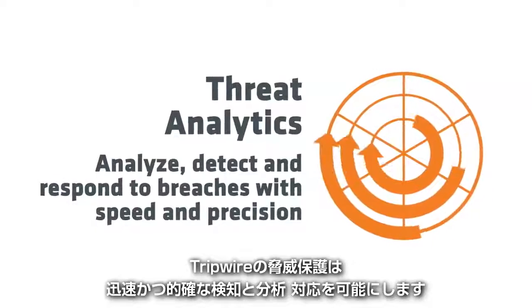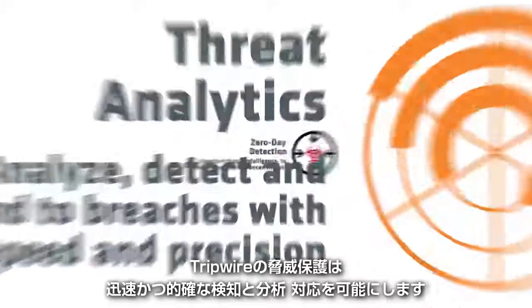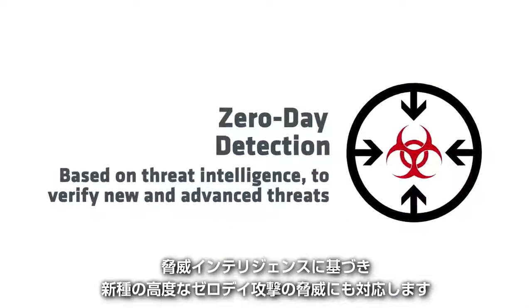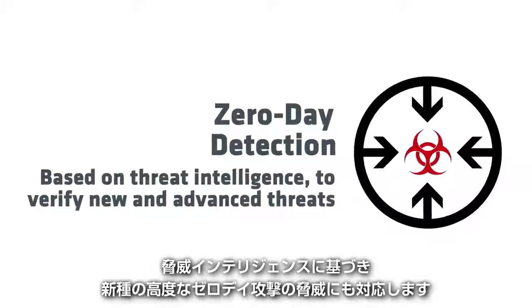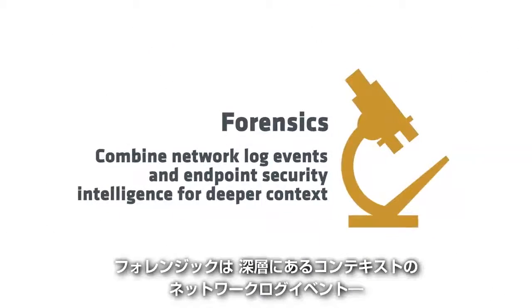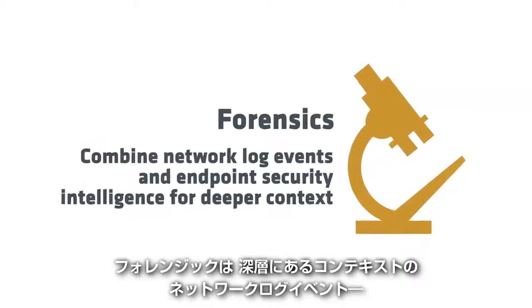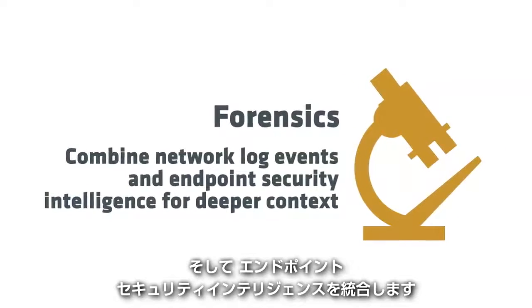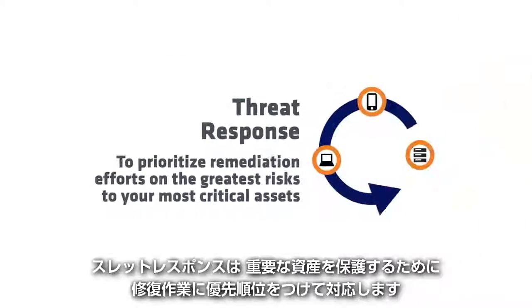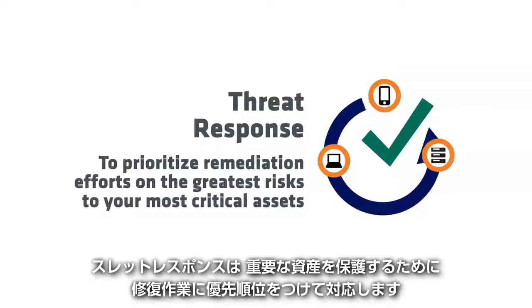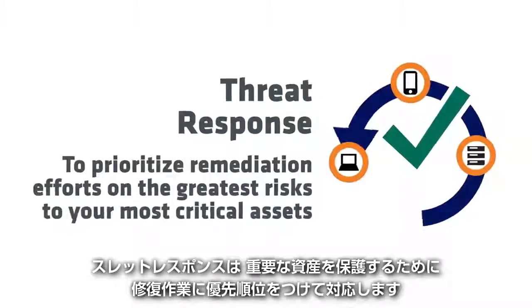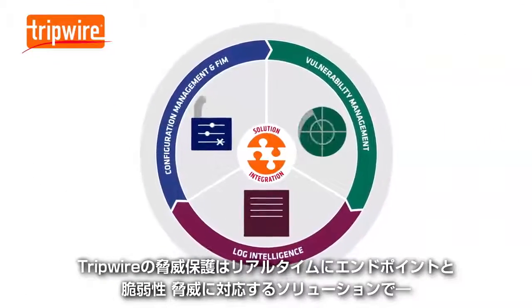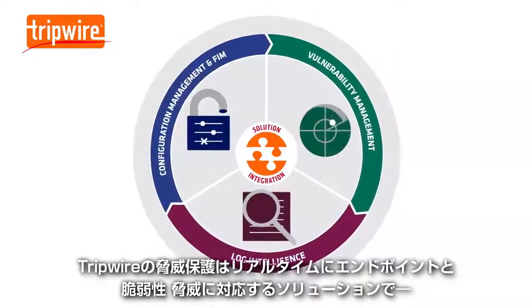Tripwire Adaptive Threat Protection enables threat analytics to analyze, detect, and respond to breaches with speed and precision. Zero-day detection is based on threat intelligence to verify new and advanced threats. Forensics combine network log events and endpoint security intelligence for deeper context, and threat response prioritizes remediation efforts on the greatest risks to your most critical assets.